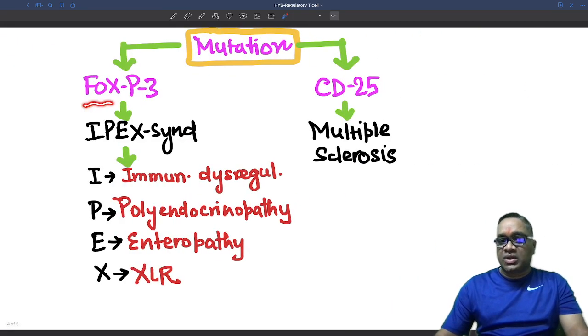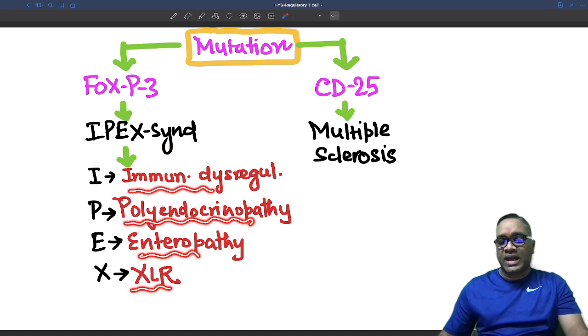For example, if there is a mutation in FOXP3, IPEX syndrome will occur, which stands for immune dysregulation, polyendocrinopathy, enteropathy, X-linked recessive disorder.